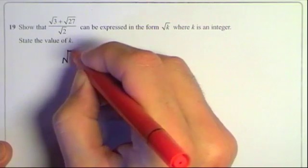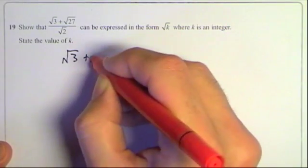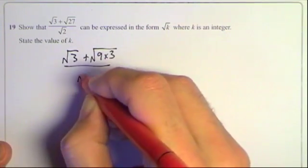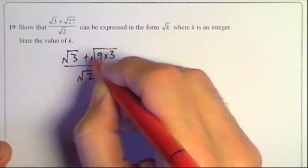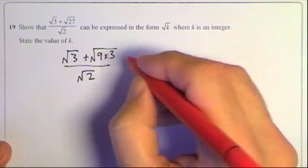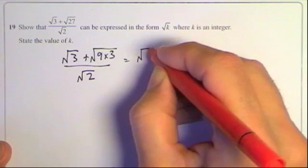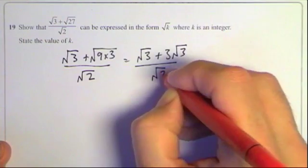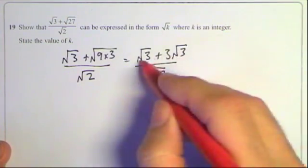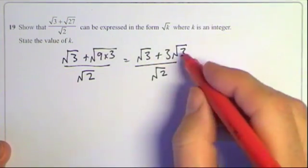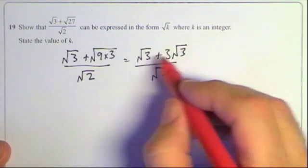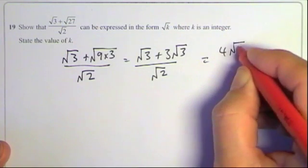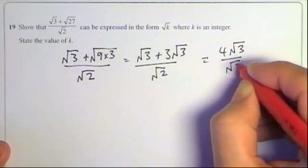Fortunately, √27 can be written as √(9 × 3). Keeping that over √2: √9 is 3, so that becomes 3√3 over √2. Now I've got the same type of surds on top, I can add them. It's √3 plus 3 more √3s, making a total of 4√3 over √2.